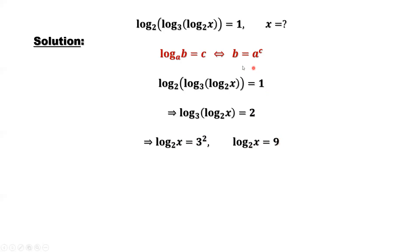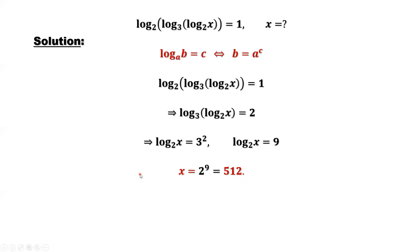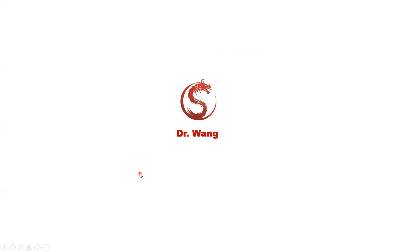Use this definition again. We have b here, that's x. a is 2, c is 9. This implies x equals 2 to the power 9, which is 512. 512 is the answer. That's all. Thanks for watching, and see you next time.